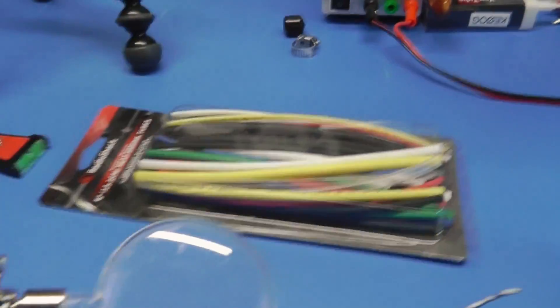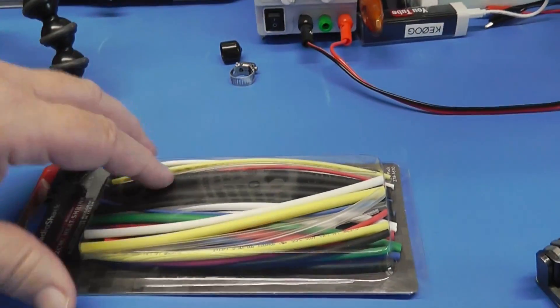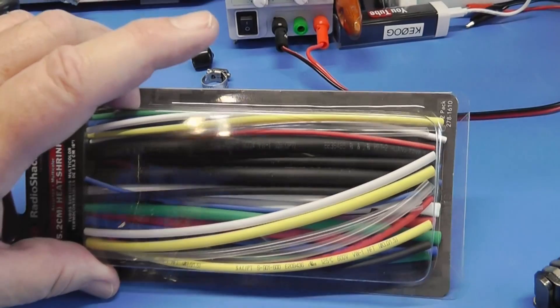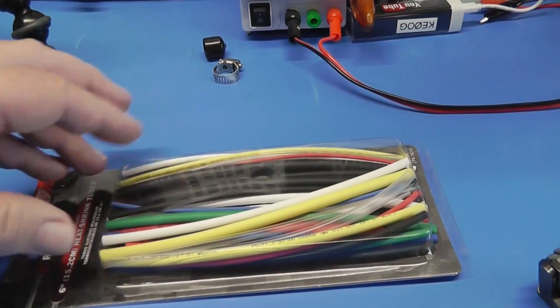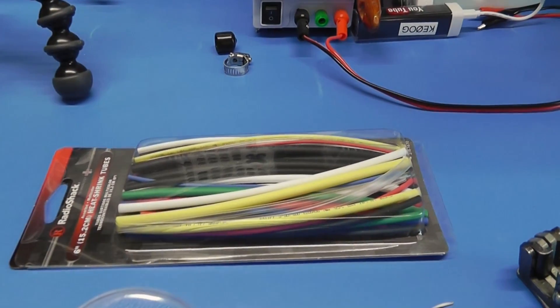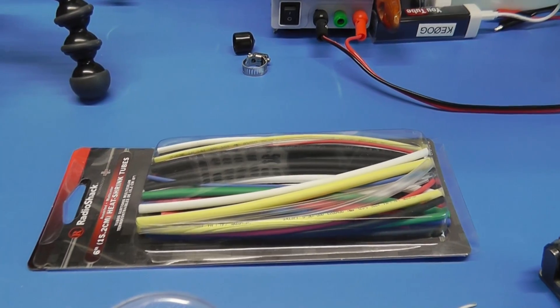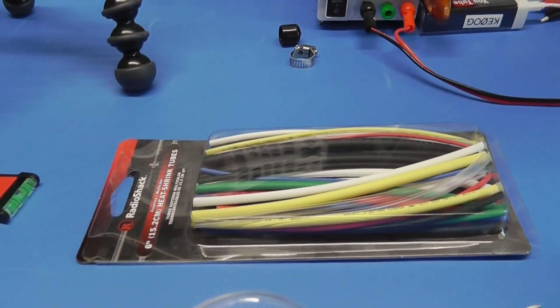Speaking of heat shrink tubing, here it is. The heat shrink tubing, I'll show you what it does. This tubing shrinks when it gets hot. And so we're going to use some of that to insulate what's going on. So let's get started.